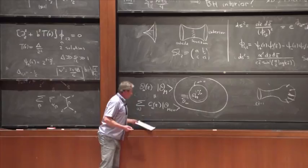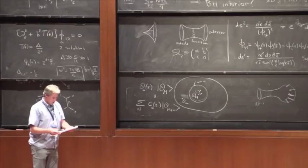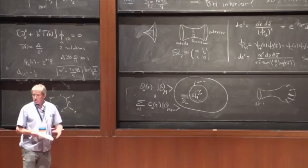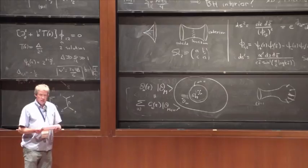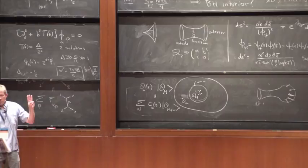Let me conclude with some homework exercises. First: second-quantize this — just means you look at many particles; it's an open problem. Second: find the wrong implicit assumption in the AMPS paper — you should be able to do it. Third, the hard one: generalize this to higher dimensions. Thank you.